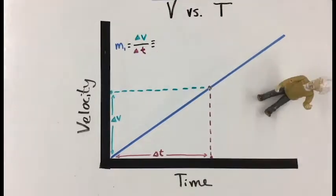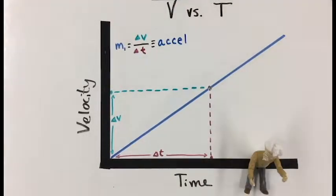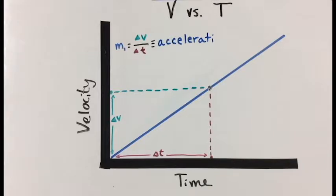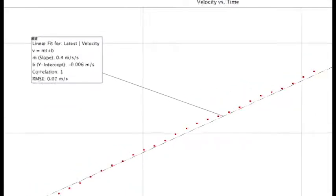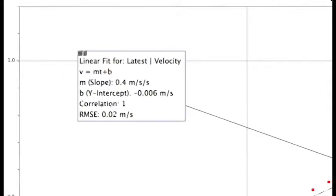The slope of a linear relationship is the change in the dependent variable over the change in the independent variable. For velocity versus time, this is acceleration. The acceleration from our data was 0.4 meters per second squared.